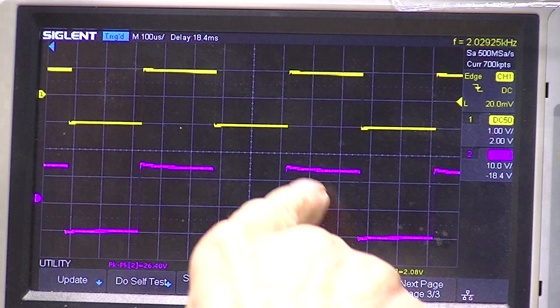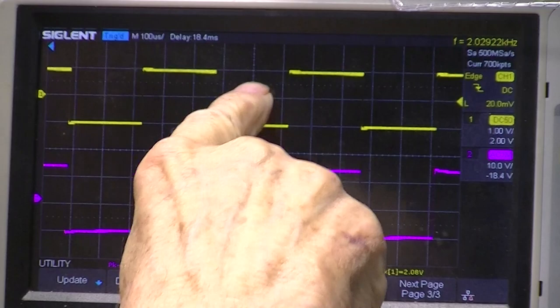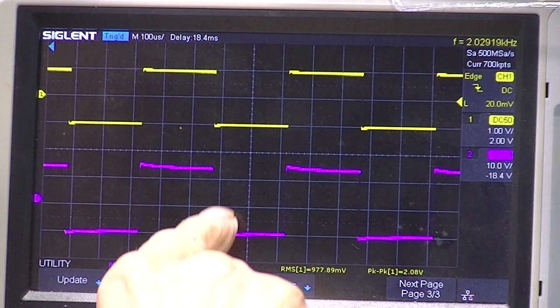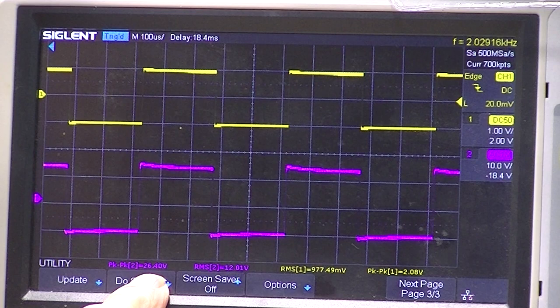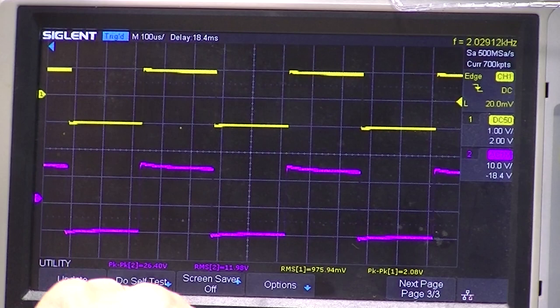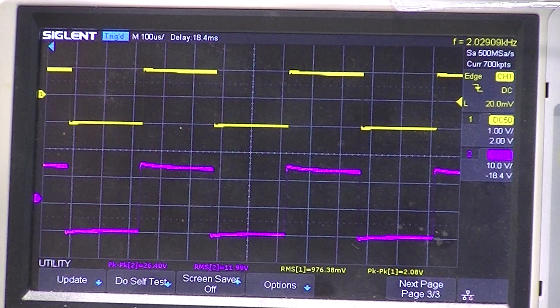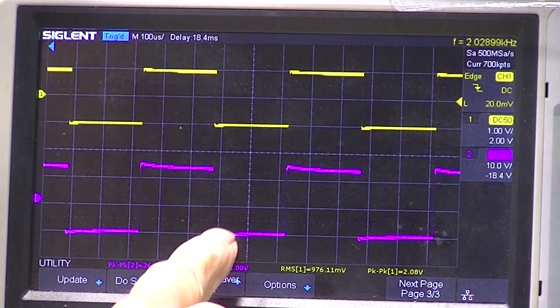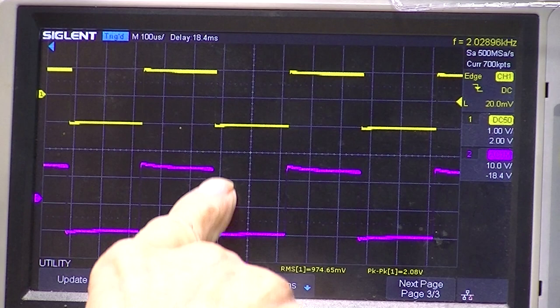With approximately a volt RMS input or 2 volts peak to peak I'm generating 12 volts of output or 26 volts peak to peak. Now that 26 volts means I'm swinging back up and down within 2 volts of ground and 2 volts of the power supply which is plus 30. Now this would be 12 and half watts RMS.